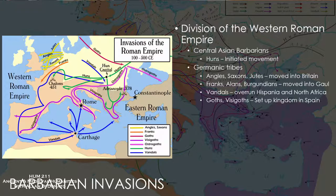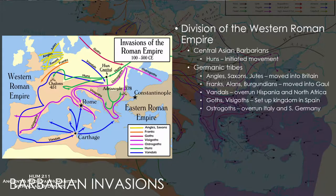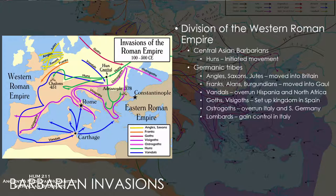The Visigoths concluded by setting up a kingdom in Spain, which lasted until the Arabic invasions. The Ostrogoths ultimately came into Italy and southern Germany. And then, a late addition to this group, the Lombards — another Germanic tribe — moved into Italy during the middle of the 6th century.